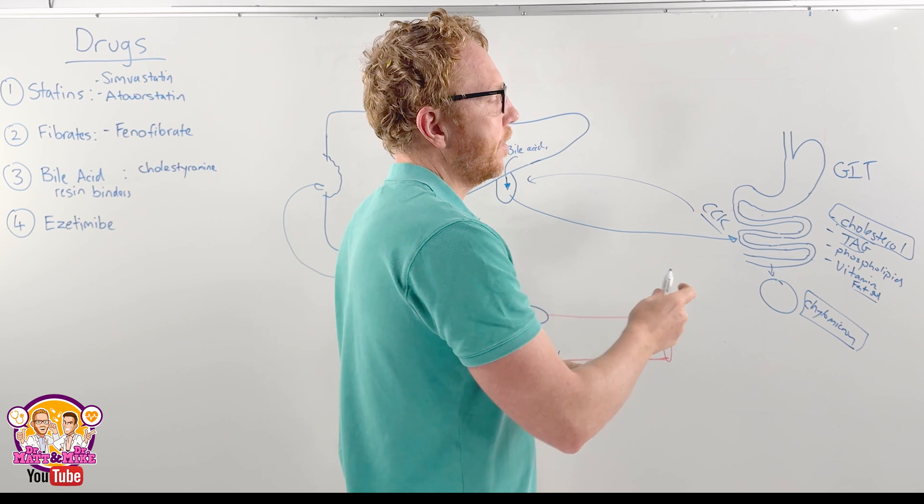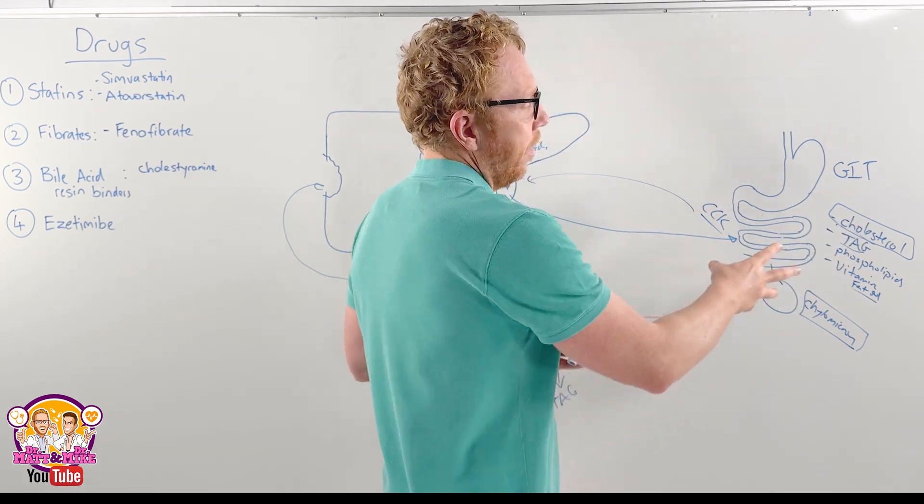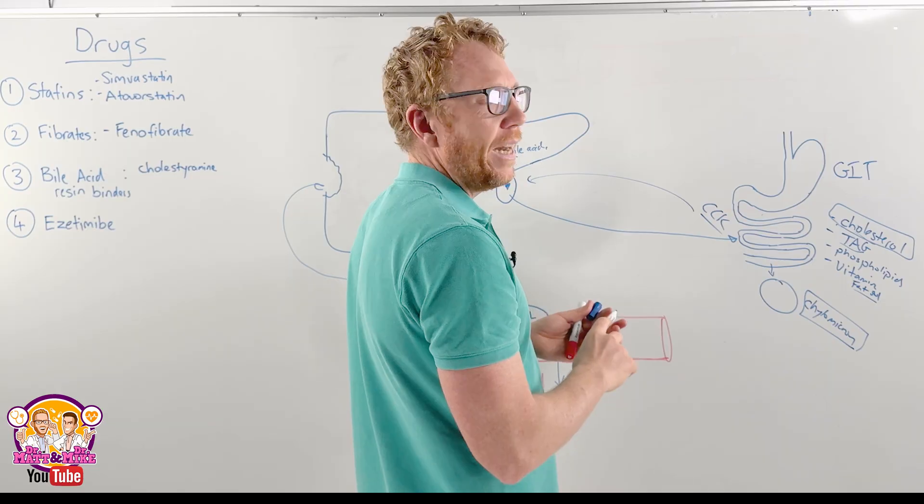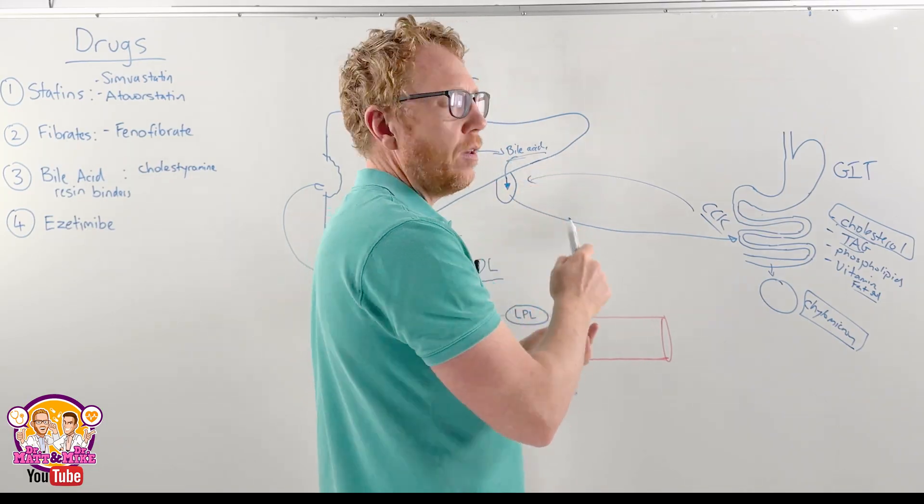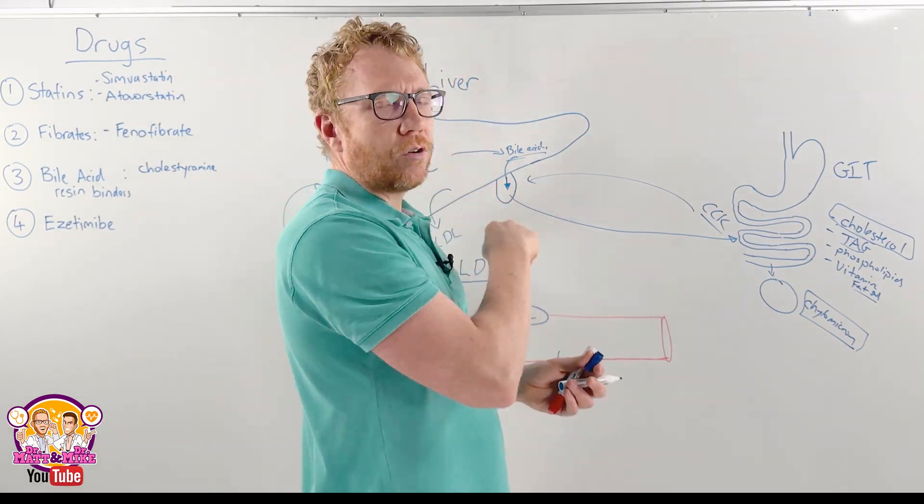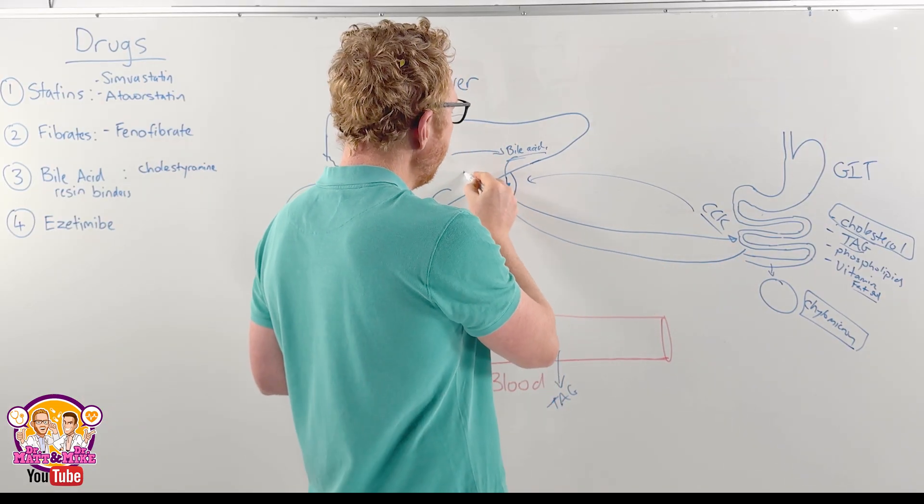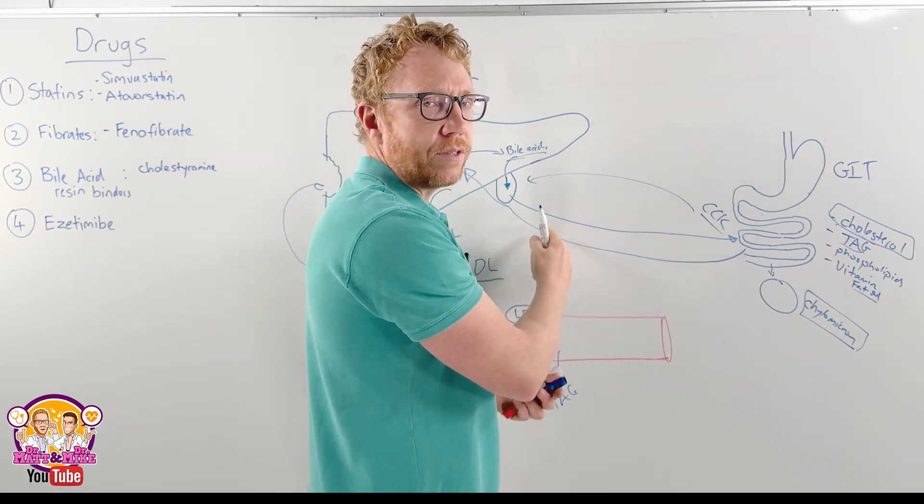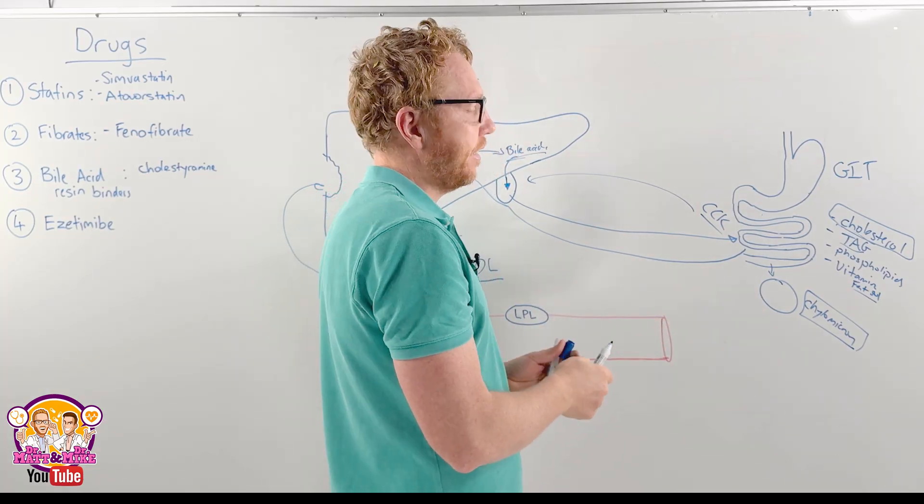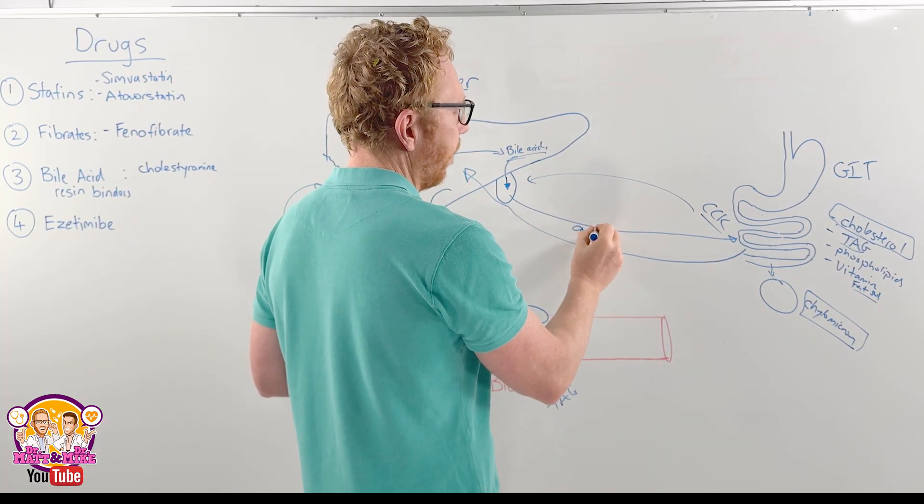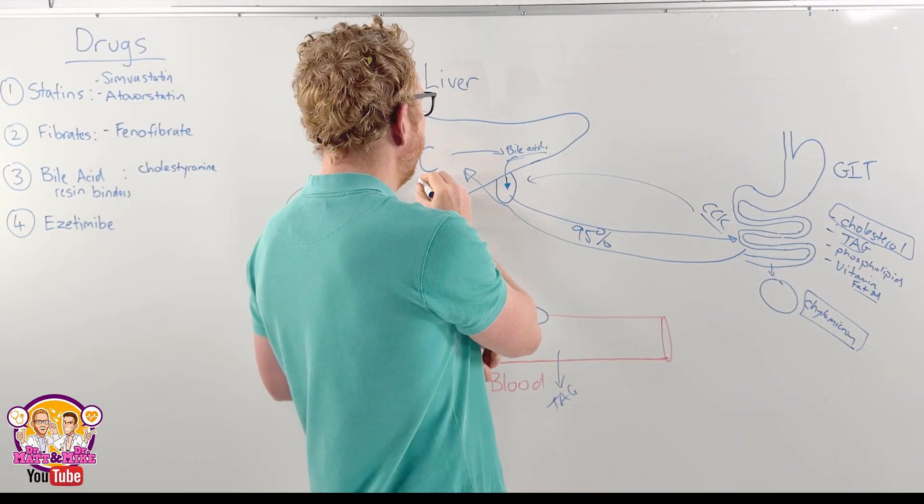Bile goes into the small intestine to help break down the fatty components which we saw here that travels in the chylomicron. But we need to reclaim that bile acid because it's got so much cholesterol and cholesterol is important. So we actually have a mechanism to bring it back to the liver through the portal system, not the lacteal system, through the portal system, and that reclaims about 95% of the bile acid, therefore the cholesterol.